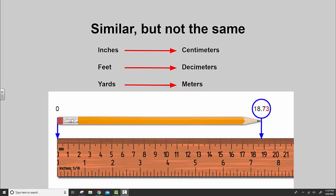You can see on the ruler below that it shows both inches and centimeters. One inch is about two and a half centimeters. One foot, which is 12 inches, is approximately 32 centimeters.